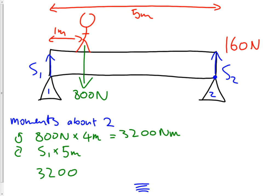3, 2, 100 equals 5S1. So, S1 equals 3, 2, 100 over 5, which equals, hopefully, 640 newtons, which I think is what we said before.